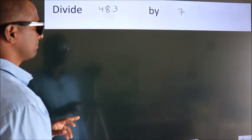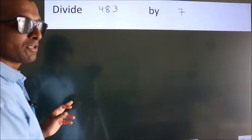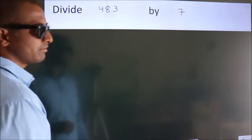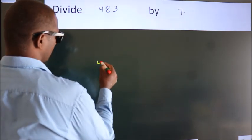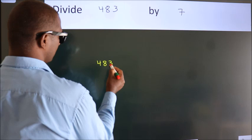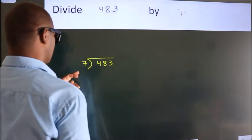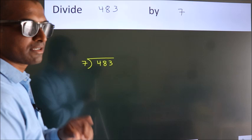Divide 483 by 7. To do this division we should frame it in this way: 483 here, 7 here. This is your step 1.